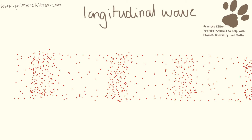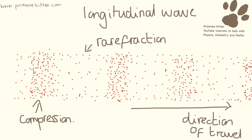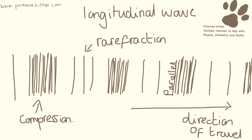And this is going to be forming a longitudinal wave. The parts of the longitudinal wave you need to know about are compression going on here, and rarefaction going on here. This is the direction of travel, and the waves are parallel to the direction of travel. So this is the compressed bit, and this is the bit where not a lot happens.